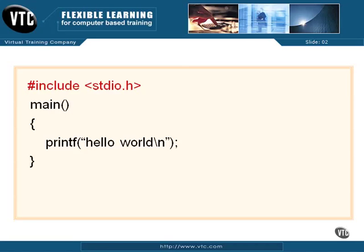The less-than and greater-than symbols around STDIO.H tell the preprocessor to look for this file in the common include area that's been defined to the compiler. If we had double quotes around STDIO instead, we would be telling the preprocessor to look for the file in a location that we set up, not the normal include area where the preprocessor should look for common header files. So that's our preprocessor directive.